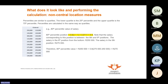Now we look at percentiles, which are similar to quartiles. The lower quartile is the 25th percentile and the upper quartile is the 75th percentile — they're the same thing. If a question asks for the lower quartile or the 25th percentile, it's asking for the same value. Percentiles are calculated in the same way as quartiles.